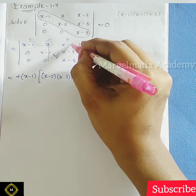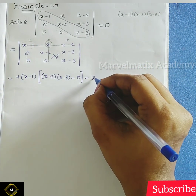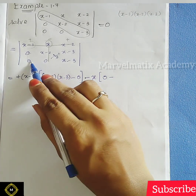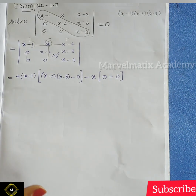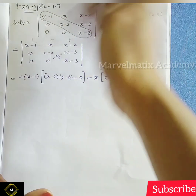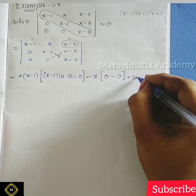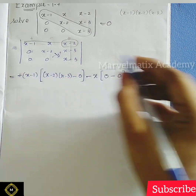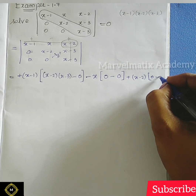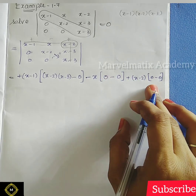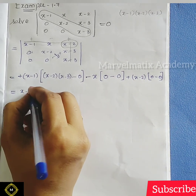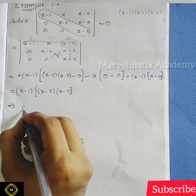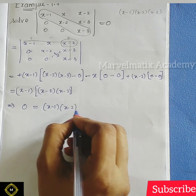This term will cover and cancel on one side. So minus x into 0 into, we choose 0 into — we multiply 0 into 1 minus 0 into, this is zero. Next is the third term. So plus x minus 2 into, now we go to this row and this column. 0 into 0 is 0, minus 0 into x minus 2 is 0. So everything equals 0, and the result is 0 equals x minus 1 into x minus 2 into x minus 3.